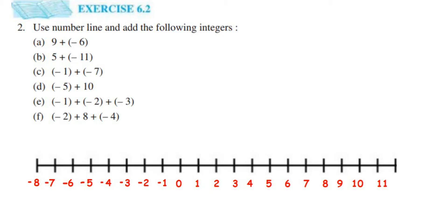Hey everyone, so here I am doing exercise 6.2, second question. This is from the integer chapter of class 6, and the question here is: use a number line and add the following integers. So we have to use number lines to add these integers.